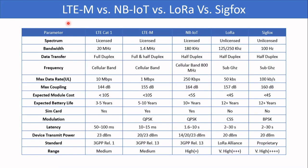Now let's compare different IoT networks: LTE CAT1, LTE-M, NB-IoT, LoRa, and Sigfox. These first three operate in the licensed spectrum, whereas LoRa and Sigfox operate in the unlicensed spectrum. Bandwidth decreases as we move from LTE CAT1 to Sigfox. In terms of data transfer: LTE CAT1 is full duplex, LTE-M is full and half duplex, and NB-IoT, LoRa, and Sigfox are all half duplex — meaning we cannot send and receive signals simultaneously; at one time we can send, and at another time we can receive.